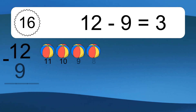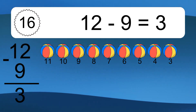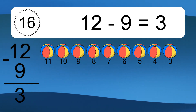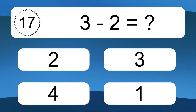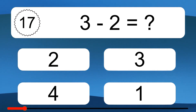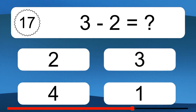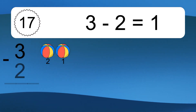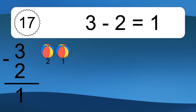12 minus 9 equals what? 12 minus 9 equals 3. Let's count it: 11, 10, 9, 8, 7, 6, 5, 4, 3.